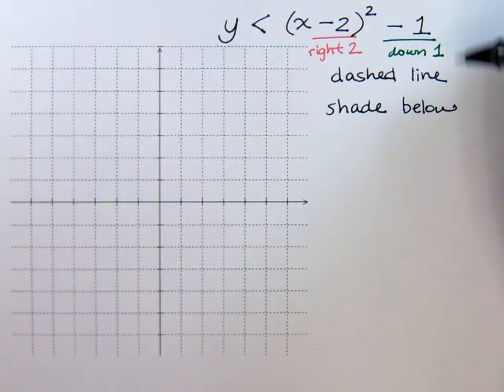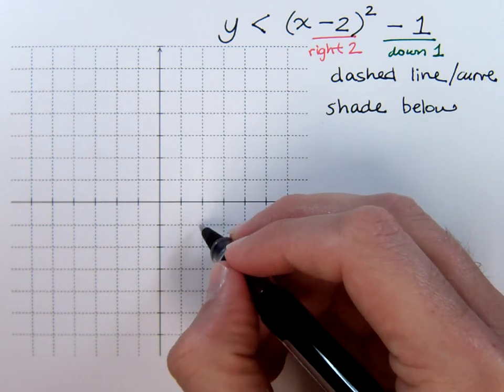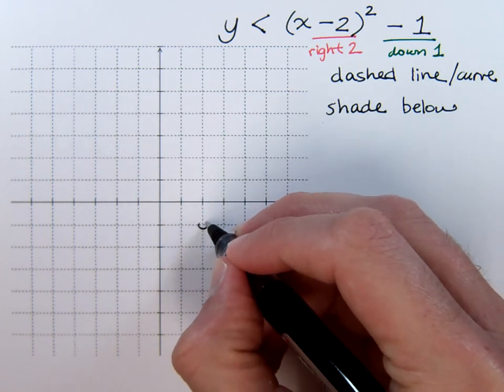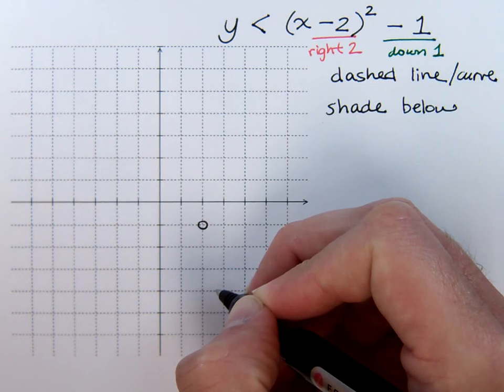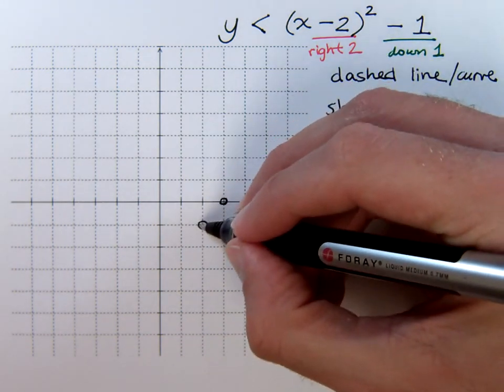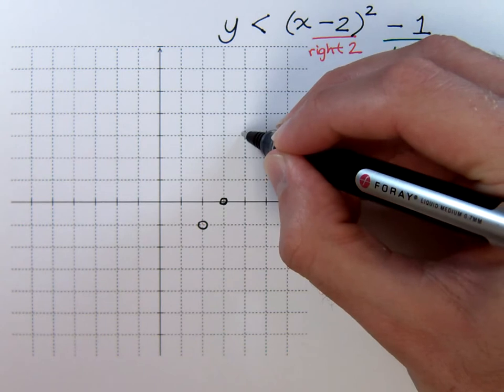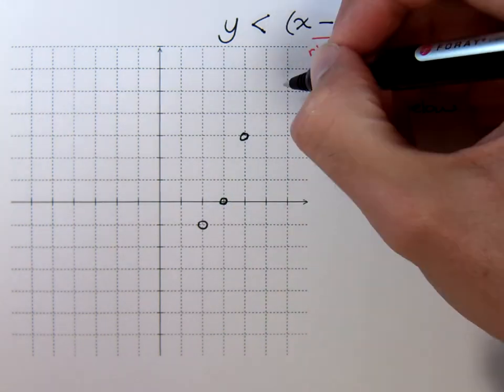Now, since we have a dashed line or dashed curve, we know that we need to use open circles. So, going to the right 2 and down 1 is my vertex. Now, let's just put the rest of the points on here and see what happens. So, 1 squared is 1, 2 squared is going to be 4, 3 squared would be 9, so I'm off the graph a little bit.